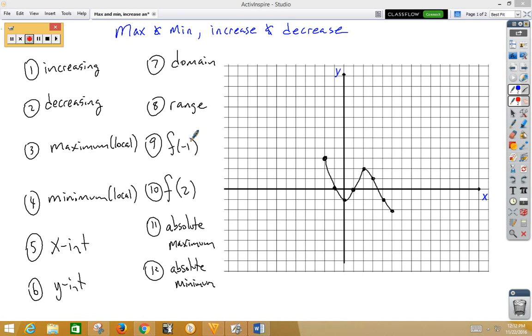Let's first take a look at number one. We want to know on what intervals is this graph increasing. This graph appears to be increasing right here where the green is, and my x values then would be from 0 to 2.